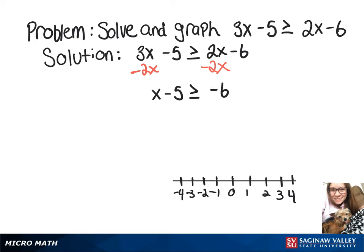So now we're going to add 5 to both sides, which is going to leave us with x is greater than or equal to negative 1.